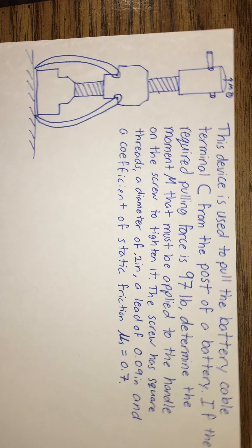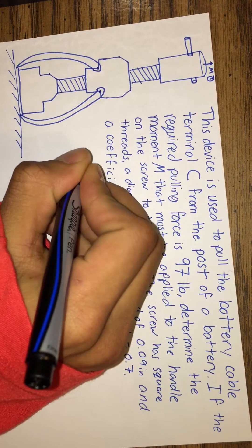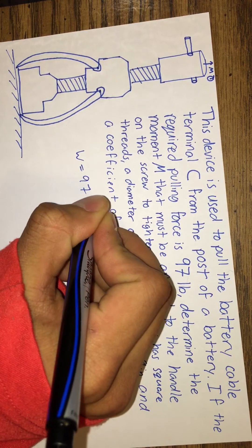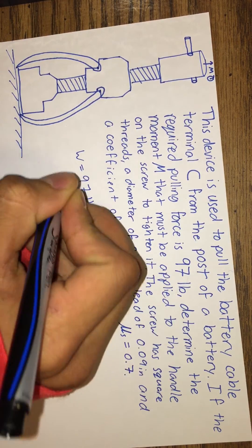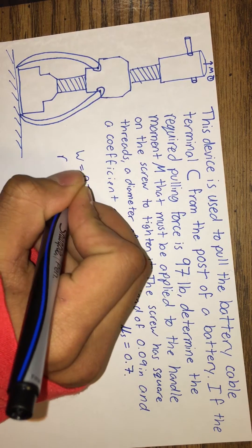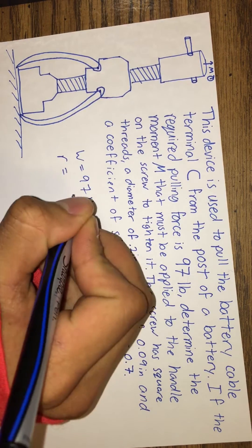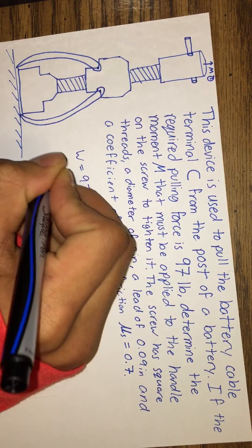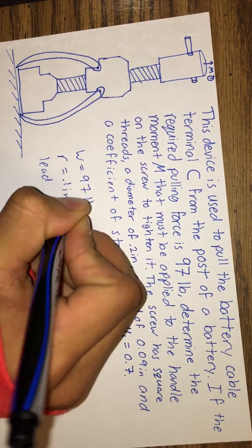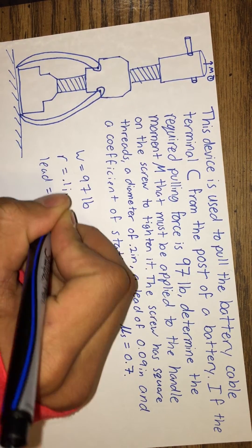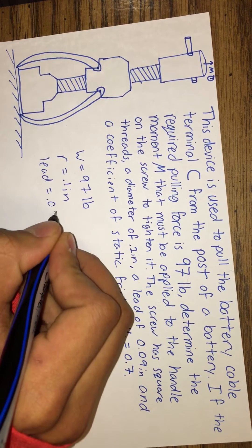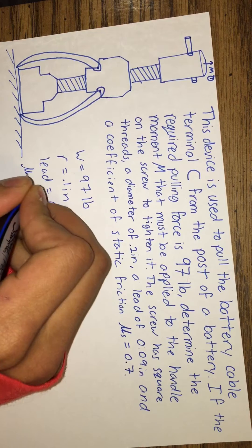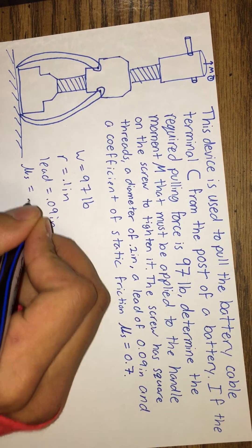We are given the weight W which equals 97 pounds, the radius which is half of 0.2 inches, which is 0.1 inch, the lead which is 0.09 inches, and the coefficient of static friction which equals 0.7.